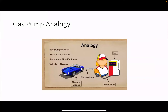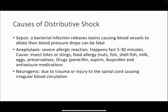The last type is distributive shock — that's when the hose is not working properly, not from obstruction but from another cause, like the hose being punctured or leaky. Causes include sepsis, where a bacterial infection in the blood releases toxins causing blood vessels to dilate, blood pressure drops, and it can be fatal. Anaphylaxis is a severe allergic reaction that can happen fast — in five to thirty minutes — caused by insect stings, food allergies (most commonly nuts, fish, shellfish, milk, eggs, or preservatives), or drugs like penicillin, aspirin, ibuprofen, and anti-seizure medications. Neurogenic shock is due to trauma or injury to the spinal cord causing irregular blood circulation.